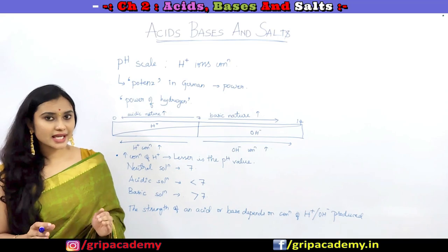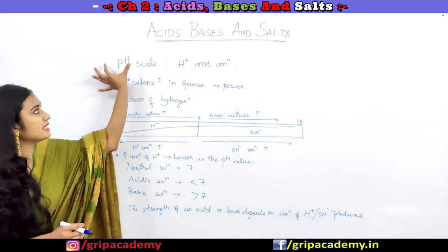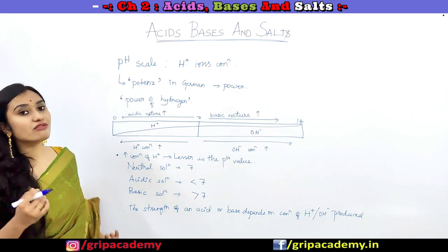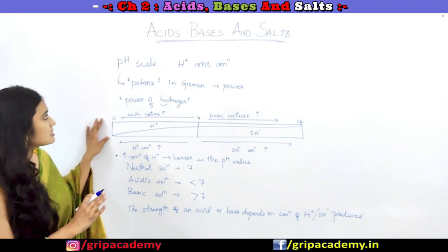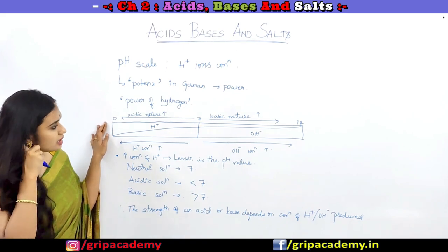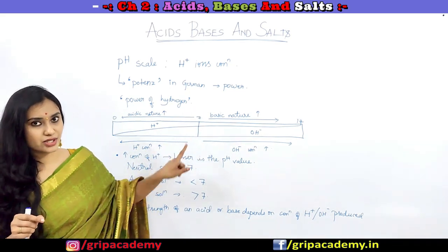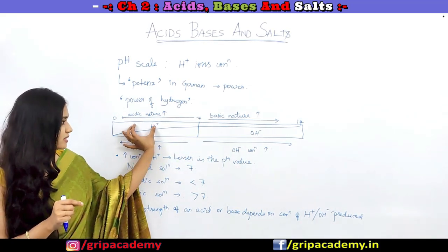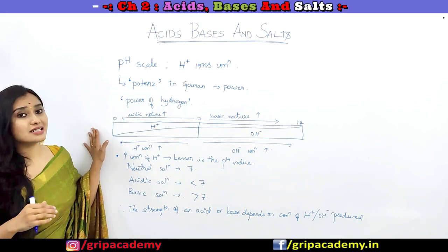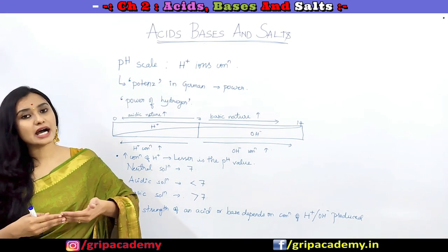The pH scale is generally a scale used to measure the concentration of hydrogen ions in a solution. The 'p' in pH refers to 'potenz' in German, meaning power — it is considered as the power of hydrogen. Generally, the pH scale ranges from 0 to 14, where 0 indicates it is highly acidic in nature, 14 indicates it is highly basic in nature, and 7 indicates it is neutral. Higher the H+ ion concentration, lower will be the pH value — so if it is a strong acid, it will have a lesser pH value.